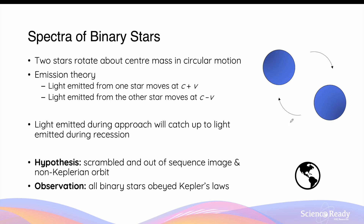Studies of binary star systems revealed no such cases where the binary stars do not follow Kepler's laws. All binary stars clearly were shown to obey Kepler's laws, and therefore this provides evidence against the emission theory where light's velocity depended on the orbital velocity of the star from which it was emitted. Of course, this observation is consistent with special relativity, as the second postulate states that the speed of light is constant in a vacuum for all inertial frames of reference, regardless of the velocity of the source — that is, the binary stars themselves — or the observer, such as a person on Earth.